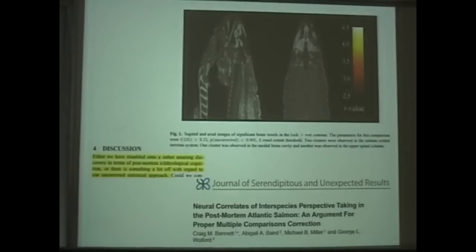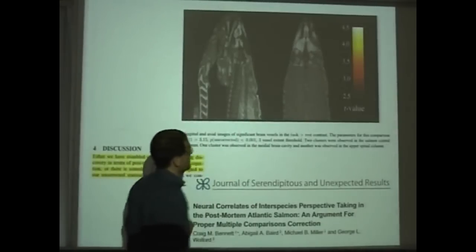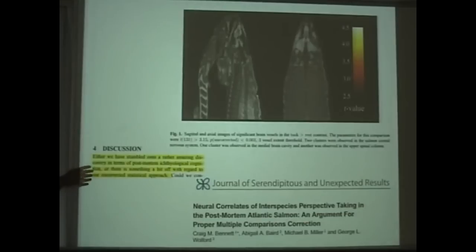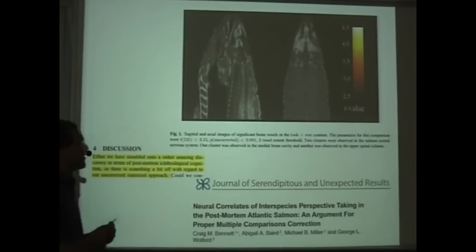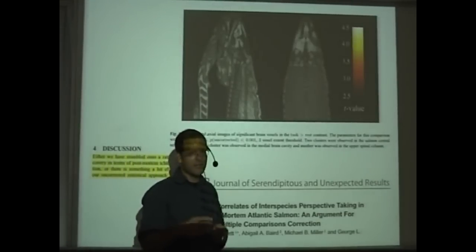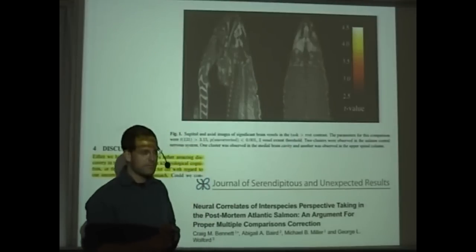So it means that if you don't do, and this is what this article is all about, if you don't do the processing the way you should, it's a good article, if you don't do the processing the way you should, then you find that showing a dead fish pictures of humans embracing or arguing and so on will lead to activations in those regions. And as the authors discuss, either this is a rather amazing discovery in terms of post-mortem etiological fish cognition, or there is something a bit off with regard to the statistical approach.